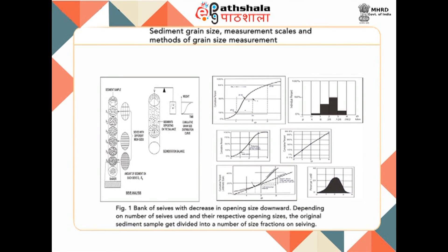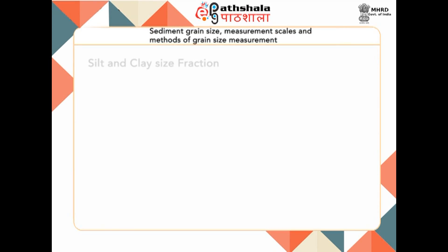Figure 1 shows the bank of sieves with decreasing opening size downward. Depending on the number of sieves used and their respective opening sizes, the original sediment sample will be divided into a number of size fractions on sieving. Sediments of the silt and clay size fraction cannot be measured by sieve analysis because of their high cohesive character — you cannot separate individual grains due to their cohesiveness. In lieu, the measurement of size for these sediments is done through other methods, most of which deal with the settling velocity of the sediment grain in liquids following Stokes' law.